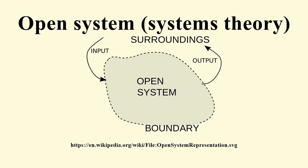An open system is a system that has external interactions. Such interactions can take the form of information, energy, or material transfers into or out of the system boundary, depending on the discipline which defines the concept.